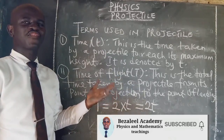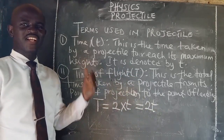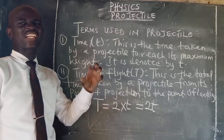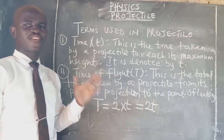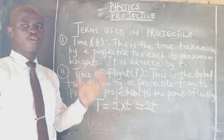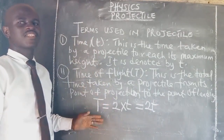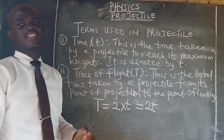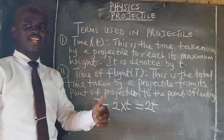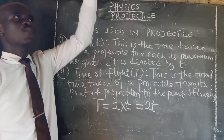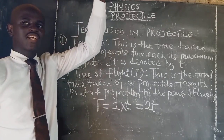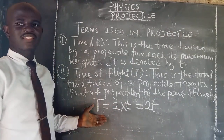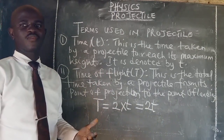Another term is time, denoted by the small letter t. This is the time taken by a projectile to reach its maximum height. Another term is time of flight. Time of flight is the total time taken by a projectile from the point of projection to the point of landing. This is why time of flight is 2 multiplied by the time to reach the maximum height.